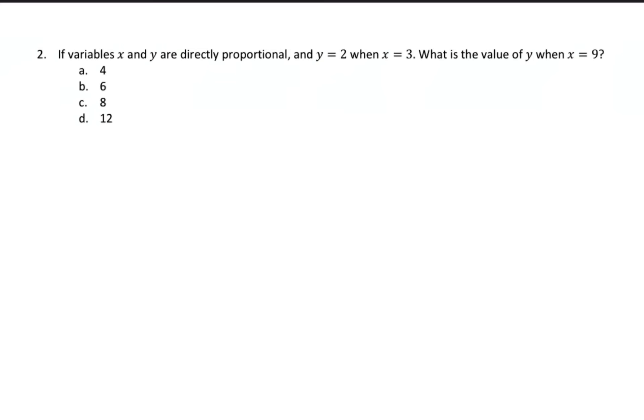So variables x and y are directly proportional, which means that when we're talking about proportional, that means that we're going to have an equal sign. Proportions are equal. And we're usually going to have two fractions that are proportional or equal to one another. So how are we going to set up this proportion? So they say y and x are directly proportional. So we're going to have y on the top and we're going to have x on the bottom.